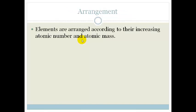First of all let's talk about the arrangement of the elements. Elements are arranged according to increased atomic number and atomic mass. Now remember atomic number is the number of protons that you have in an atom and atomic mass is the number of protons plus neutrons.